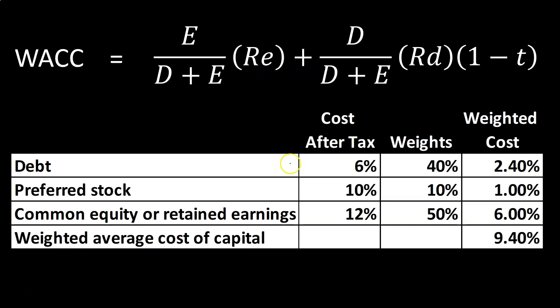In a table format, we have the cost after taxes — the cost of debt — and this is what we're focusing on: how do we get to that number? In most practice problems we'll be taking into consideration the tax impact. The cost of debt means we're getting financing and we have to rent that money, meaning we have to pay interest on it.